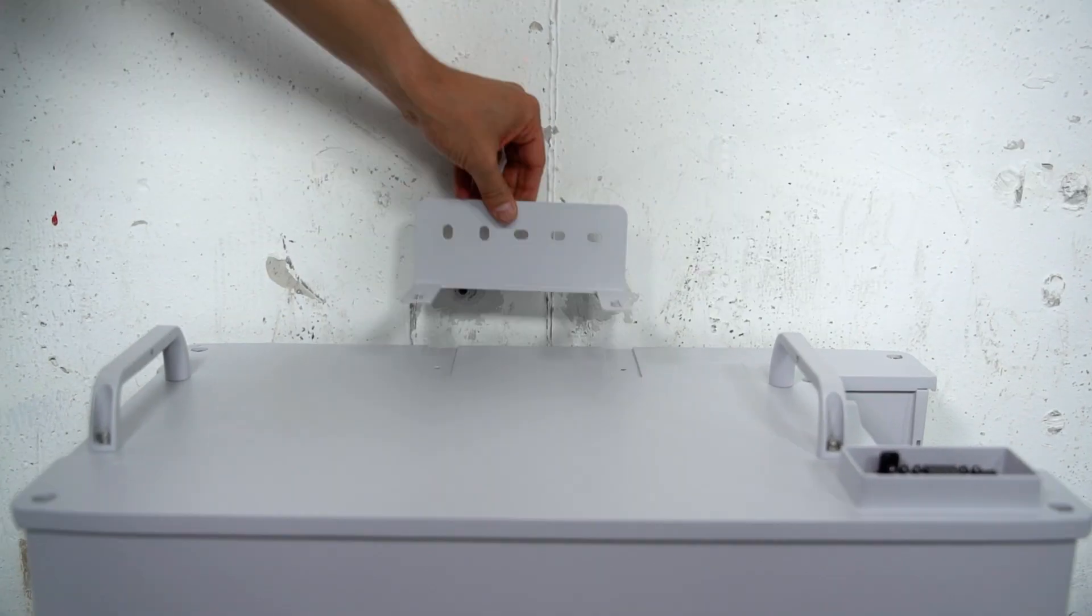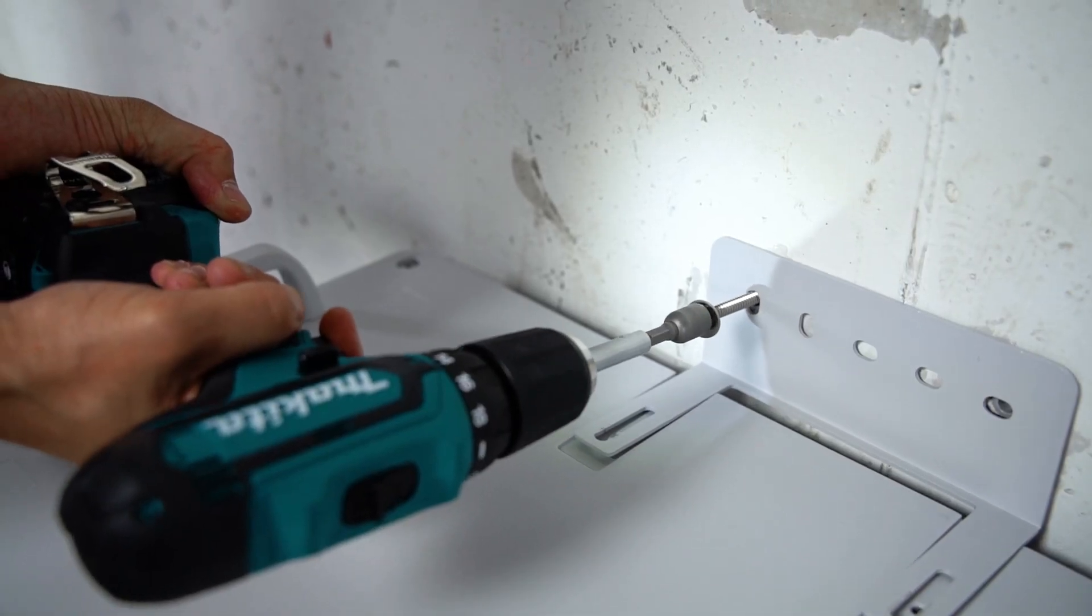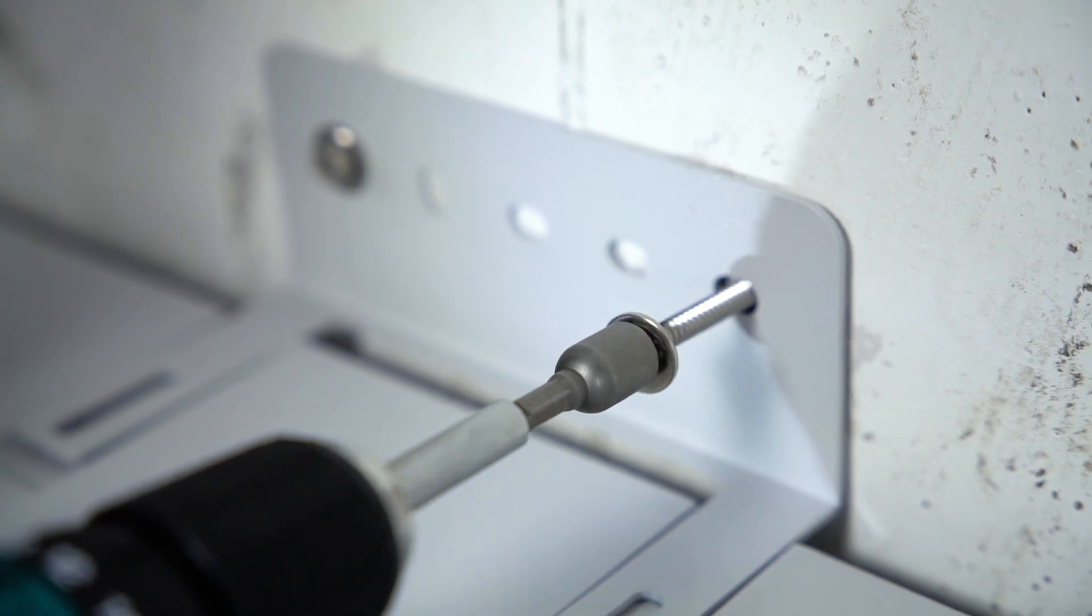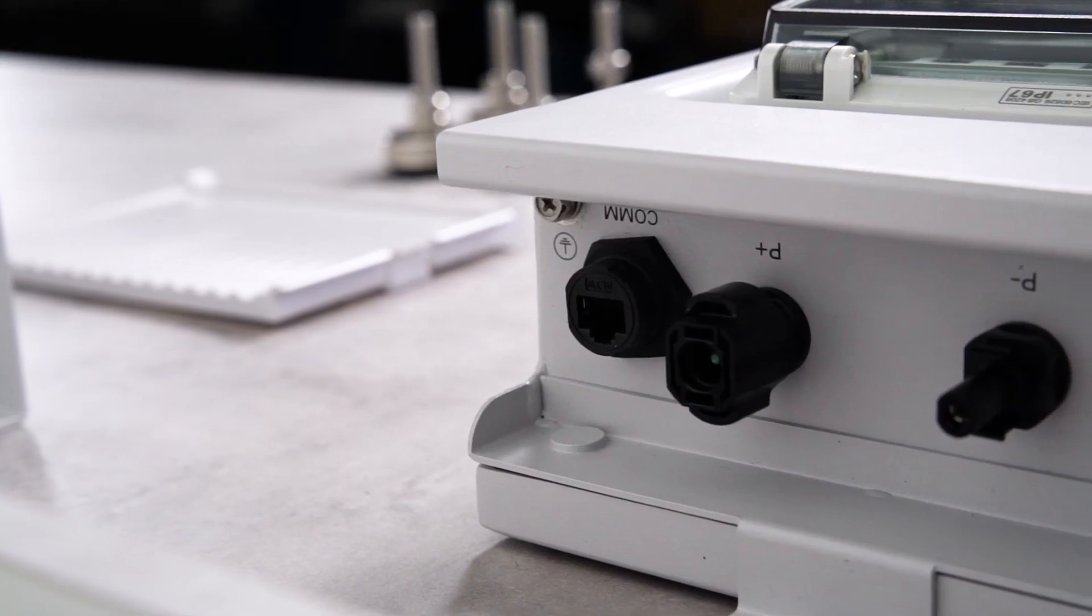Once all modules and the switchgear are in place, it's time to fix the battery on the wall. You'll need the included M4 screws for the wall and M5 screws for the module. Now, let's come to cabling.